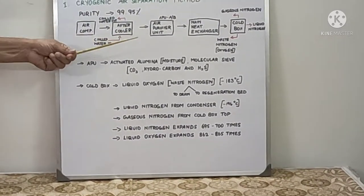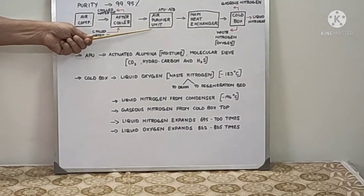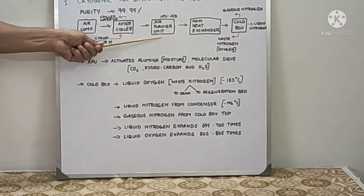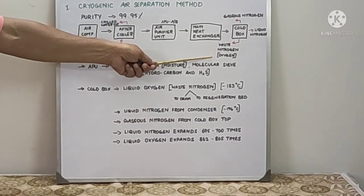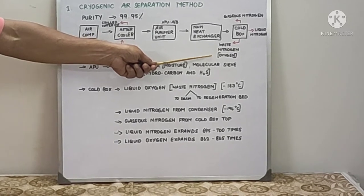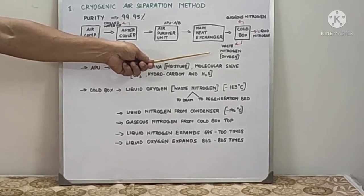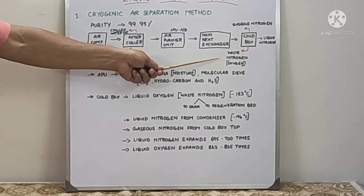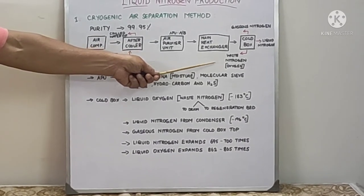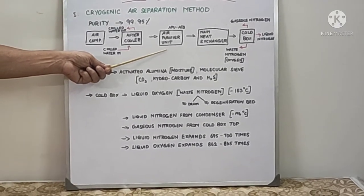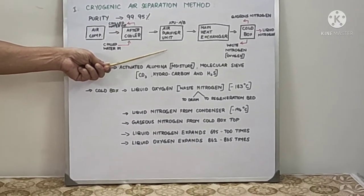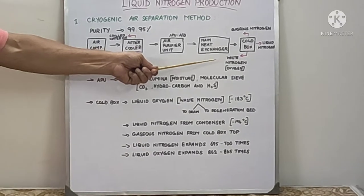In the air purifier unit, normally we will have two sets of units. One will be in service and the other will be in regeneration. The waste nitrogen that is rich in oxygen will be normally vented out by timer through the vaporizer. One line is routed to the air purifier via electric heater. The regenerated bed is regenerated by means of the waste nitrogen after getting heated.